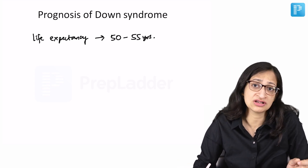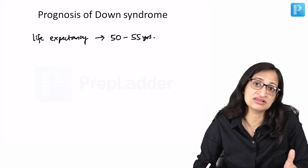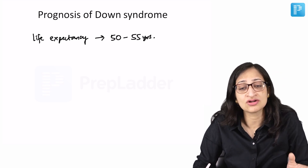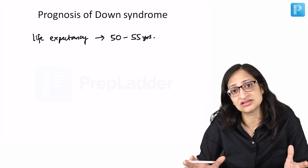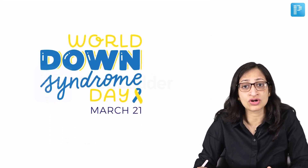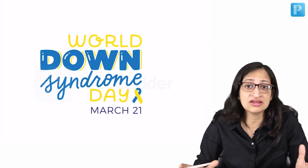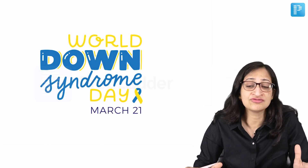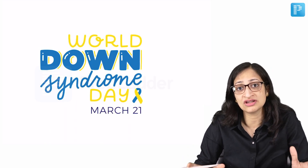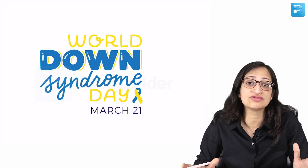Nevertheless, they do have a component of intellectual disability, so a legal guardian should be appointed for these individuals who can take care of major decisions — major health-related, financial, or other legal decisions. As a society, our role is to extend support to all such individuals with Down syndrome so that they can lead a life where they do not have to depend on everyone and are able to do their activities of daily living and engage in meaningful activities.